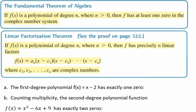It says if f(x) is a polynomial of degree n, where n > 0, then f has at least one zero in the complex number system. So you could have a + bi, or just the a, or bi.